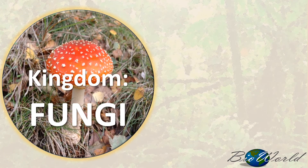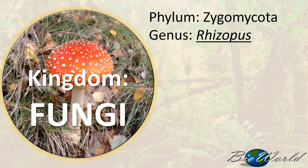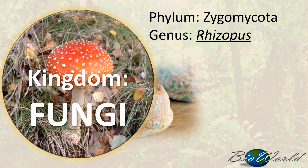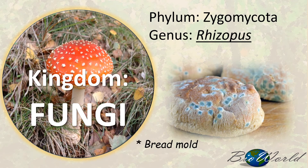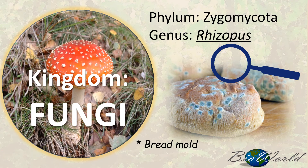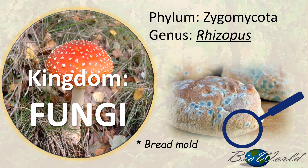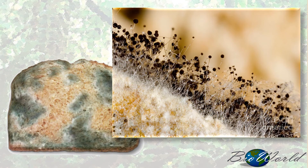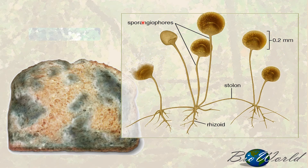Kingdom fungi. In kingdom fungi we only study one phylum — phylum zygomycota — and the genus is genus Rhizopus. A common example of genus Rhizopus is the fungus that grows on expired bread, commonly called the bread mold. The grey patches on the expired bread are Rhizopus. Upon further inspection you can see it has a stem with a circular top, which we can represent in a diagram form. We can use this diagram to discuss the characteristics of kingdom fungi.